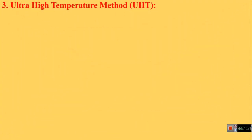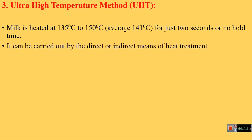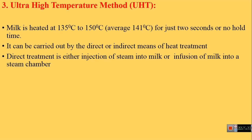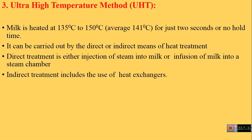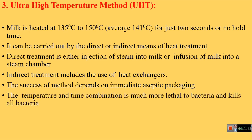The third method of pasteurization is the Ultra High Temperature (UHT) method. In this, milk is heated at 135–150°C (average 141°C) for just 2 seconds or with no hold time. Pasteurization by this process is carried out using different systems including direct or indirect heat treatment. Direct heat treatment is carried out by injection of steam into milk or infusion of milk into a steam chamber, while indirect heat treatment uses heat exchangers. The success of this method depends upon immediate aseptic packaging of the milk. The temperature-time combination of the UHT method is much more lethal to bacteria and kills all kinds of bacteria in the milk.